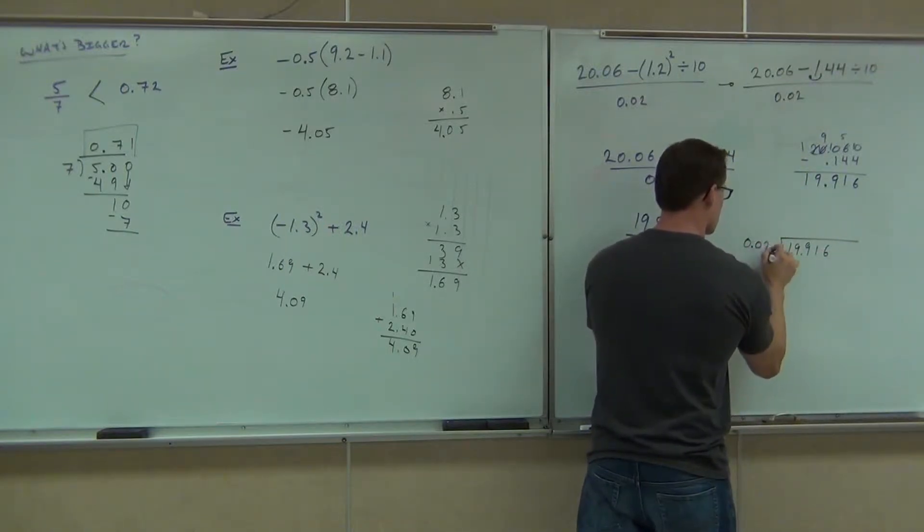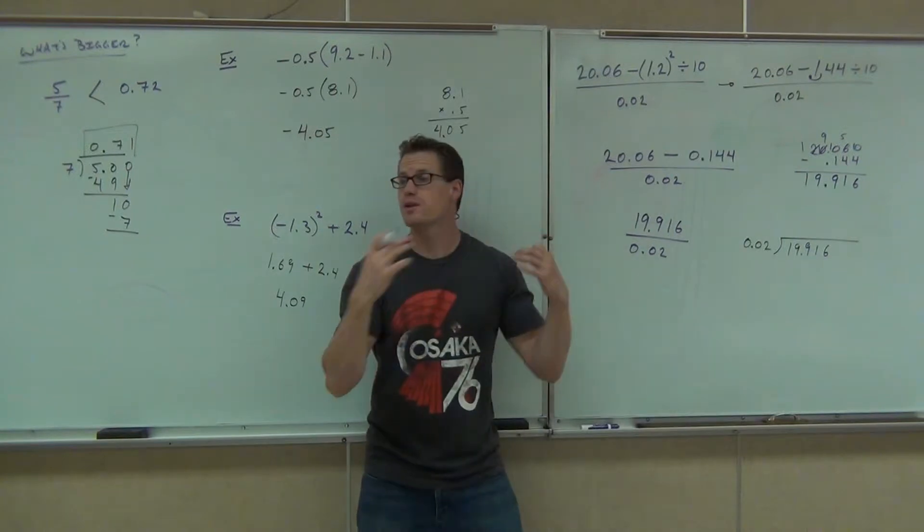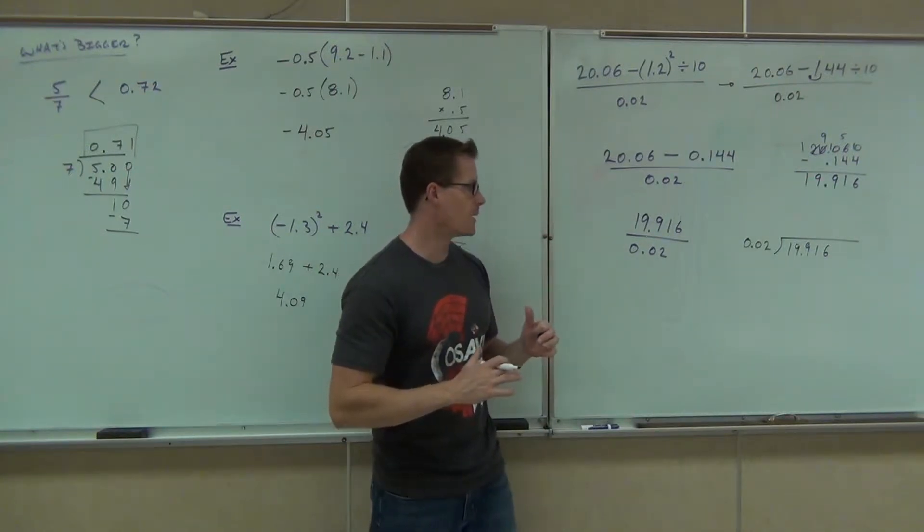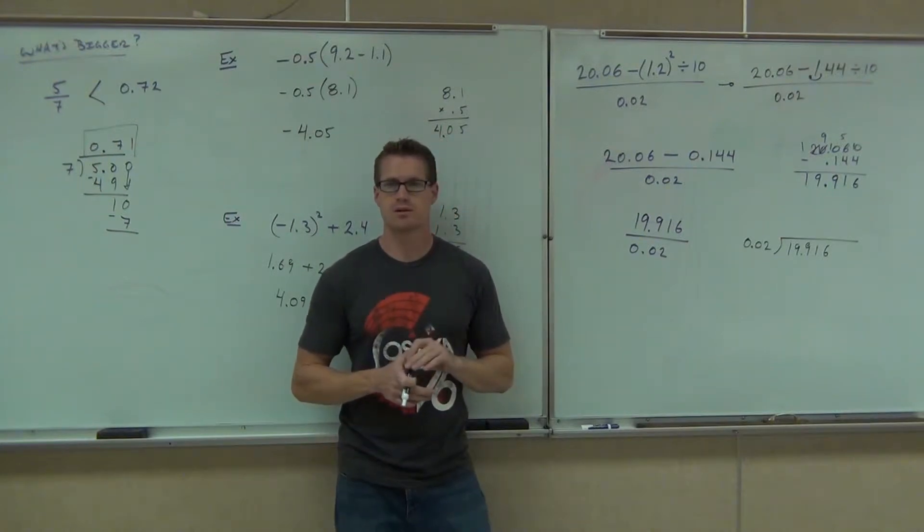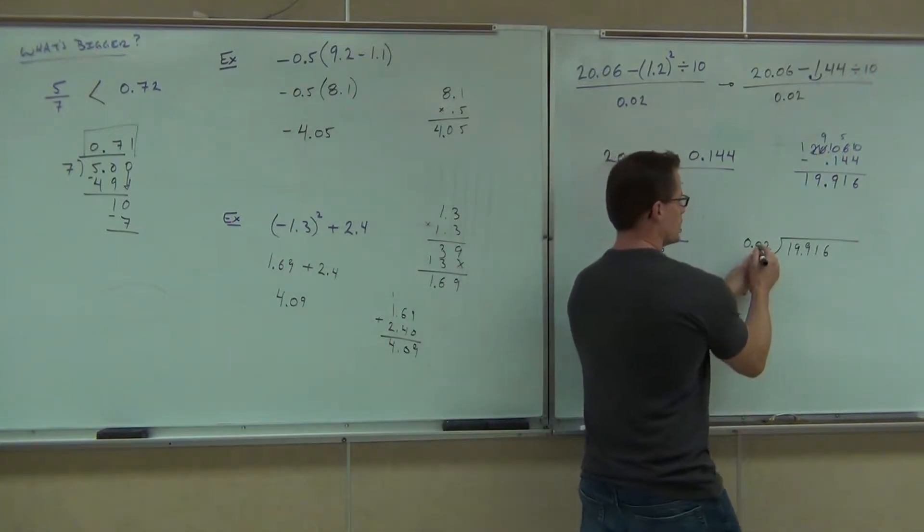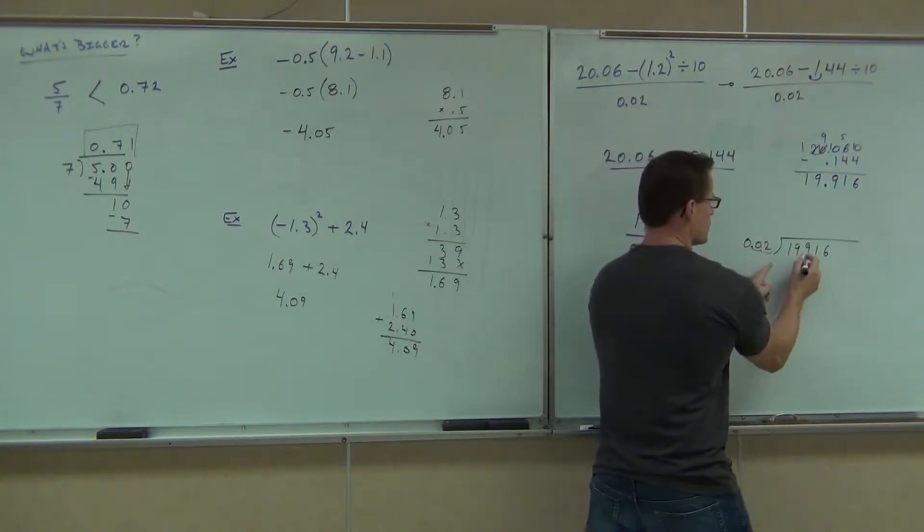We've done all this stuff already, now we're just putting them all together in an order of operations type problem. Do you need to move your decimal place? Yes, how many spots? Two. So this dictates what you do - move it two spots to the right.